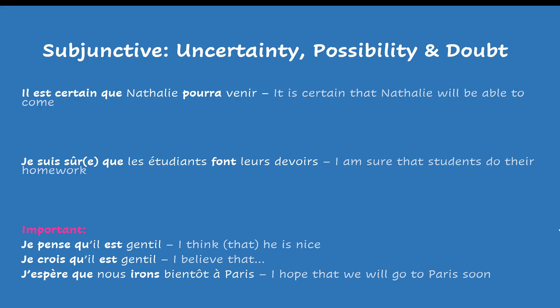In the first sentence: il est certain que Nathalie pourra venir — it is certain that Nathalie will be able to come. You have a sentence with two clauses, but in the first clause you're using an expression that says it is certain. There is no doubt, there is no uncertainty, therefore you will use the indicative — in this context, the future. You will not use the subjunctive here because the expression expresses certainty.